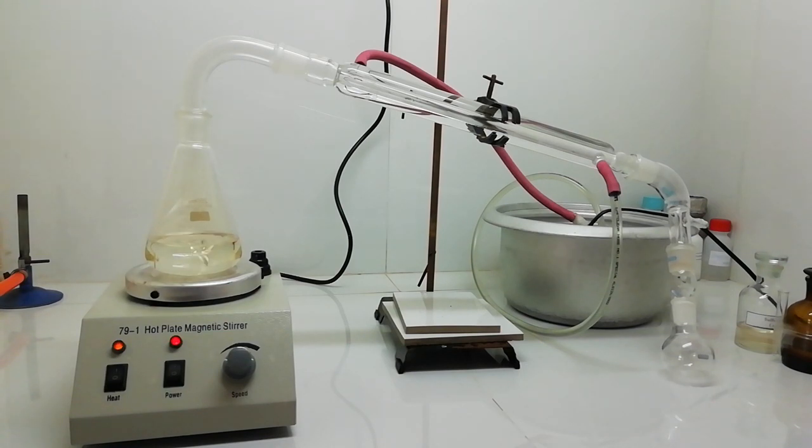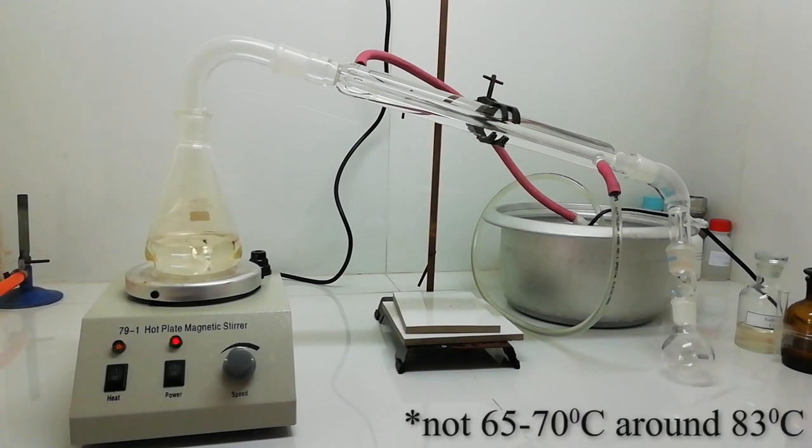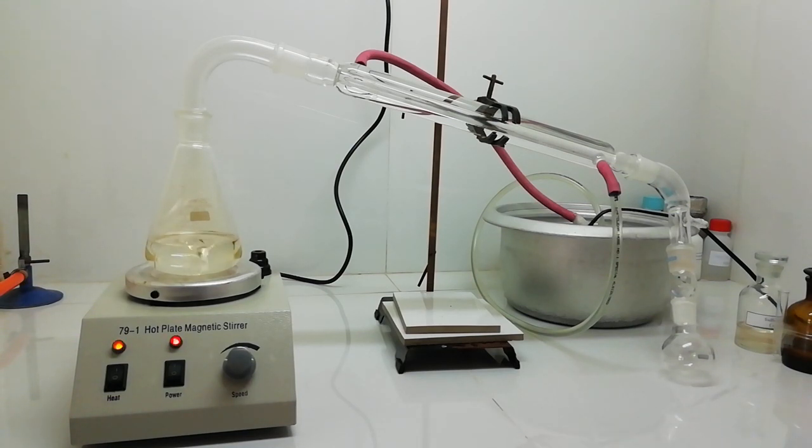Leaving the nitric acid. When we heat the mixture, nitric acid will boil at about 65 to 70 degrees Celsius. Then we collect the pure nitric acid from the other side of the condenser.